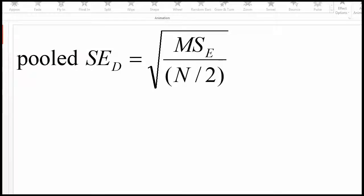In this video, I'm going to talk about the pooled standard error of the difference between related means formula that I have in the textbook to help unpack the nature of an interaction.